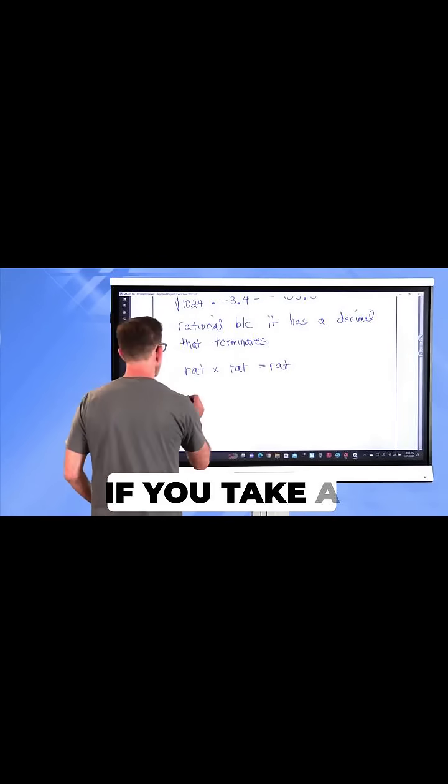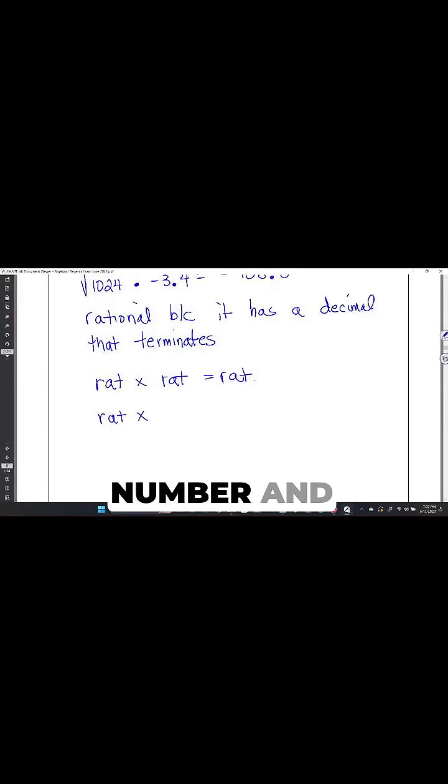If you take a rational number and multiply it by an irrational number, you will get an irrational number as long as the rational number is not equal to zero.